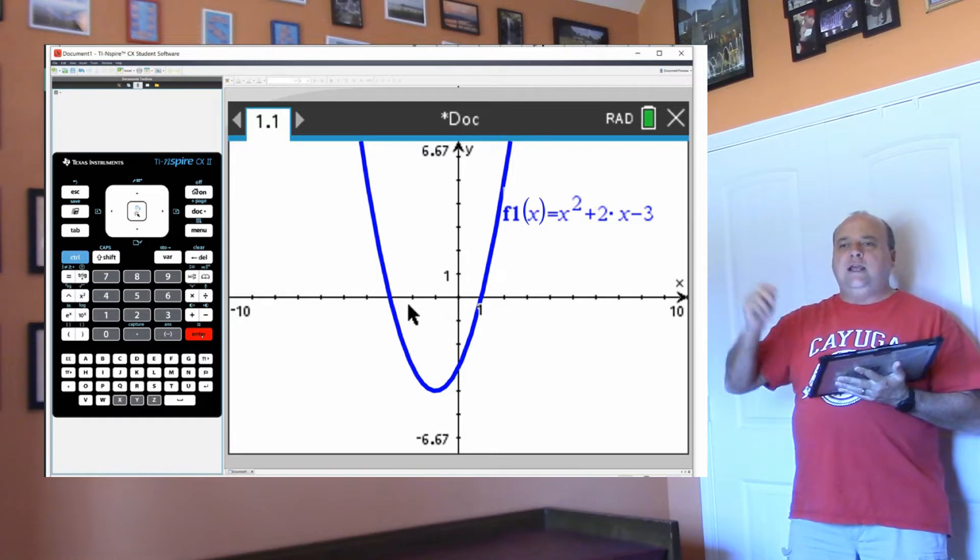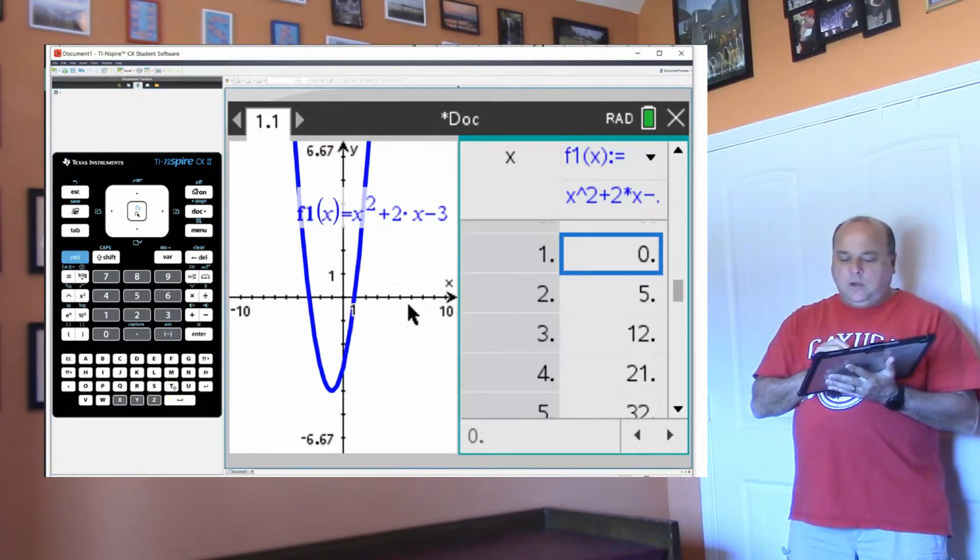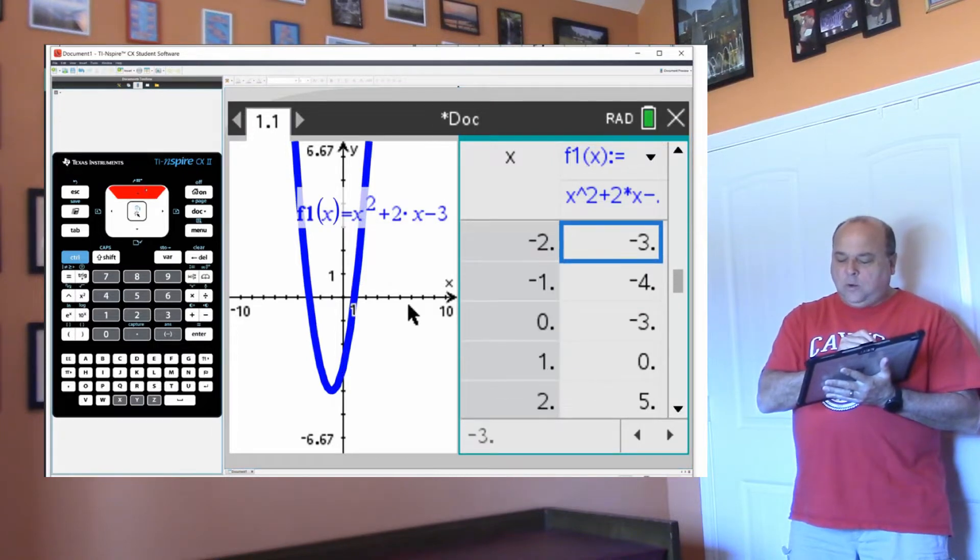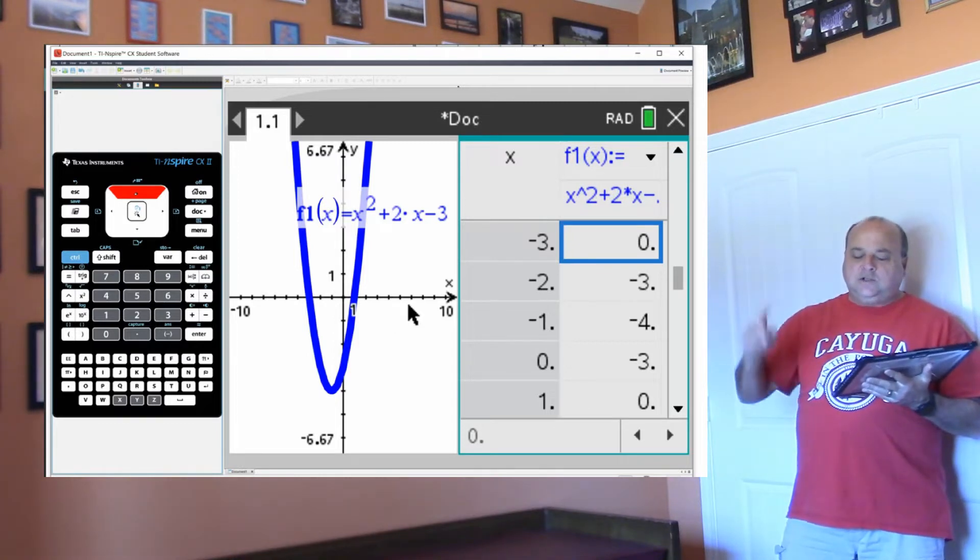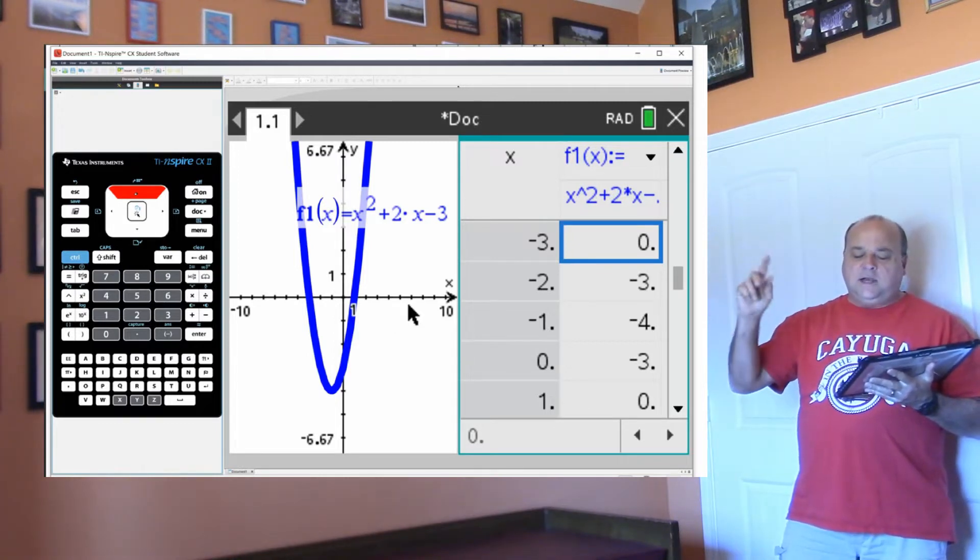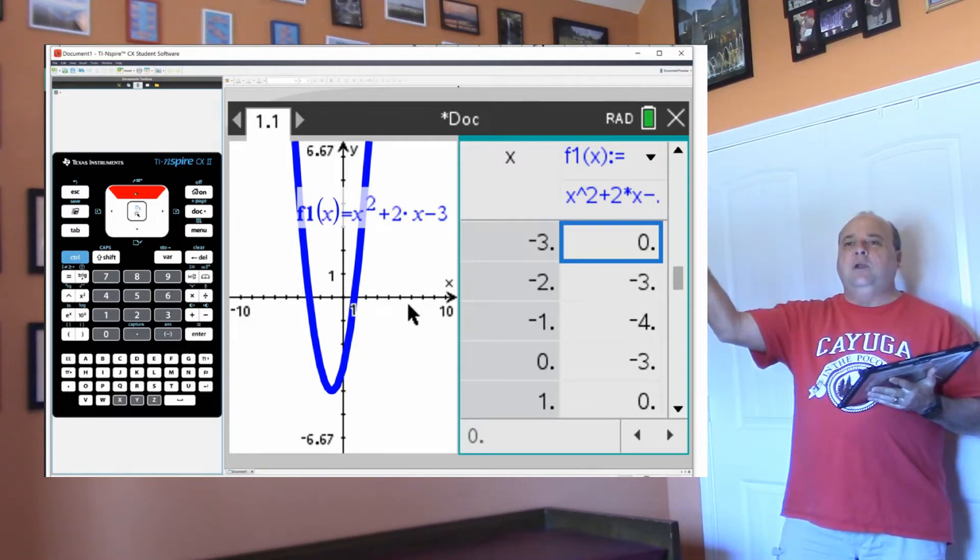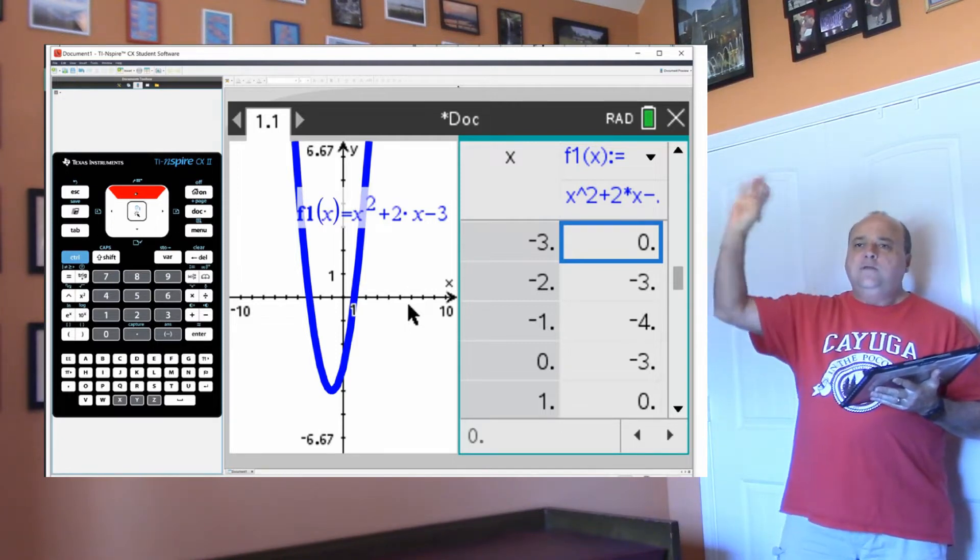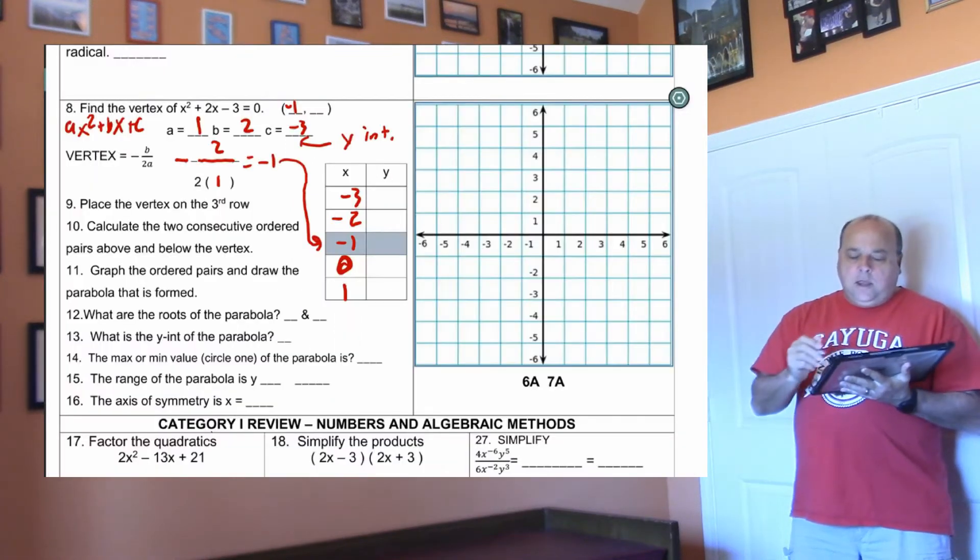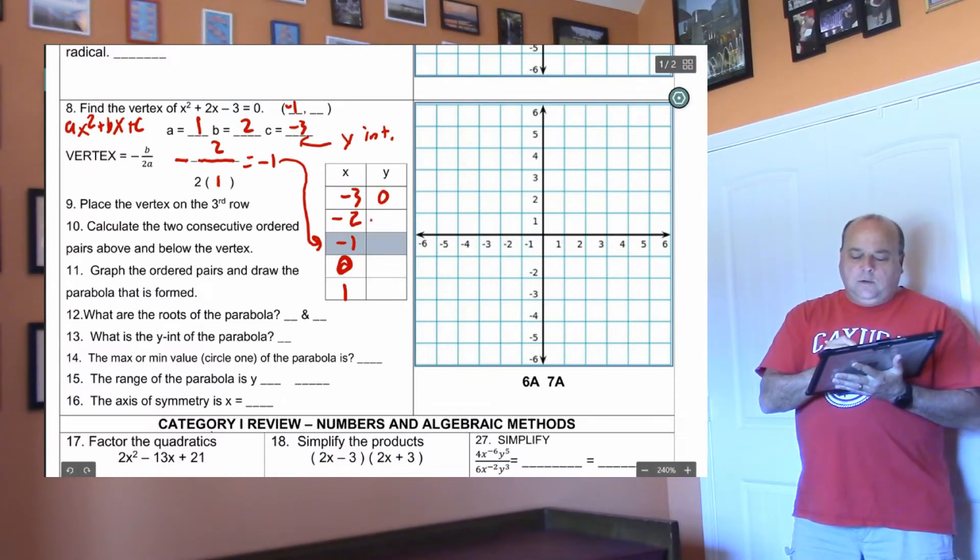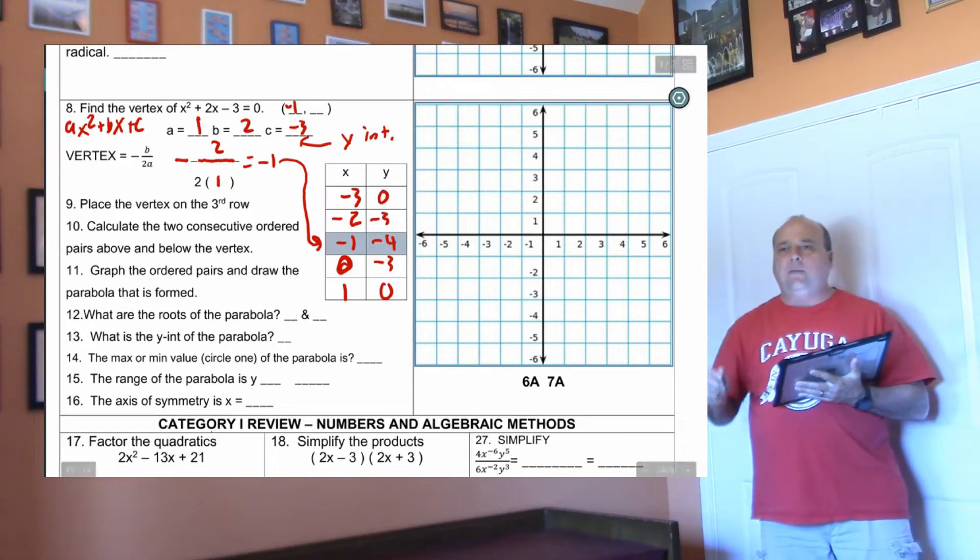And remember, we're going to hit control T and get that table. So control T gives us the table, and negative one was the vertex. So I want the negative one to be right in the middle, and that's the numbers I needed. So the negative three is going to be zero. The negative two is negative three. The negative one is negative four. And also, remember, the table of values will be symmetrical. The top two will be the same as the bottom two. So this will be zero, negative three, negative four, negative three, and zero. This is all straight from the calculator.